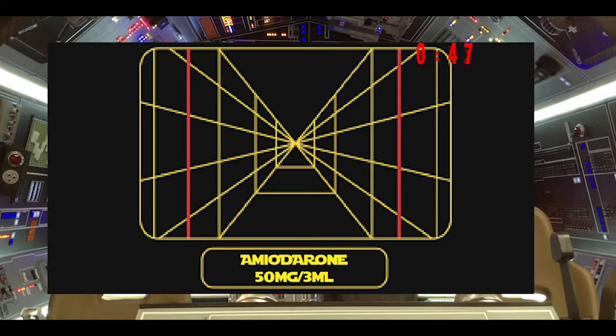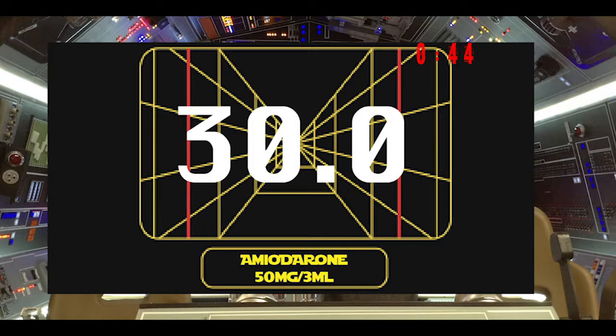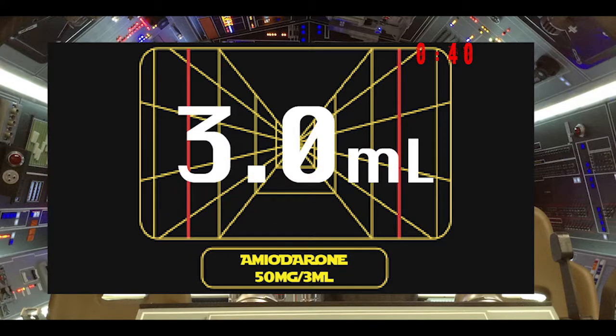So let's take amiodarone. You have a 30-kilogram, nine-year-old child. You move the decimal point once to the left, and you deliver 3mL of your amiodarone.